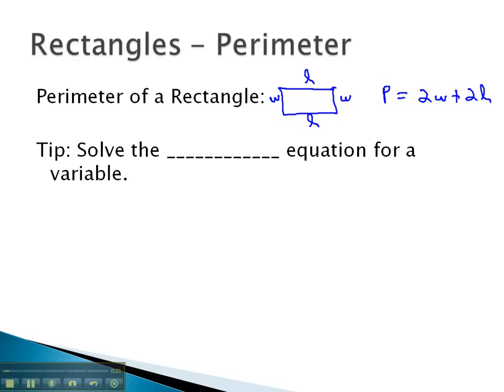We'll set these problems up often with two equations, one for the perimeter and one for the area. The tip will be to solve the perimeter equation for a variable, and then substitute it into the other equation.